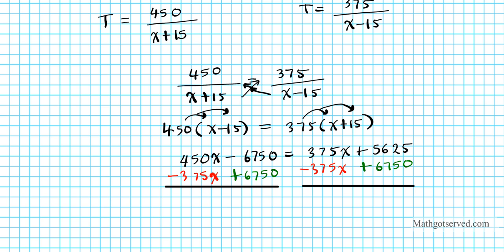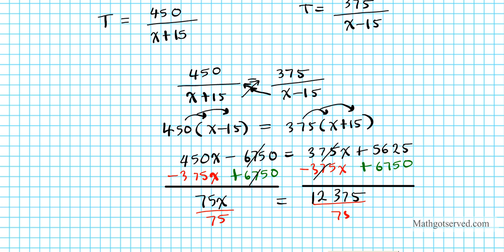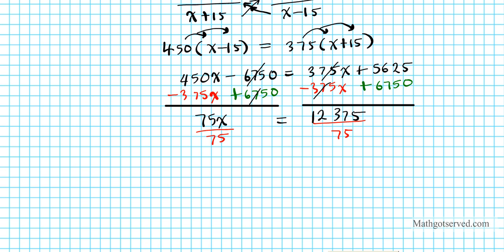Combining like terms on the left side gives 75x, and the constants combine on the right side to give 12,375. So we have 75x equals 12,375. To get x by itself, we divide both sides by 75, and we get x equals 165.